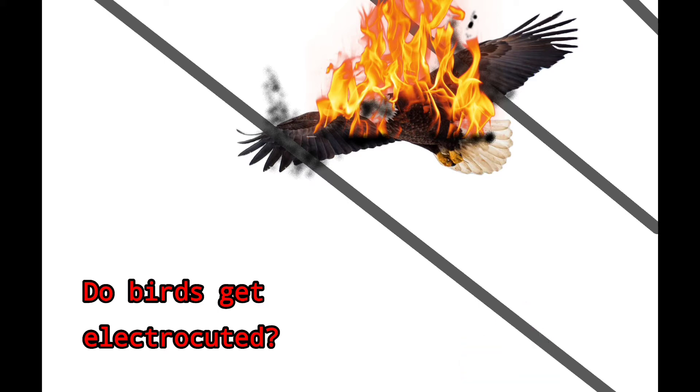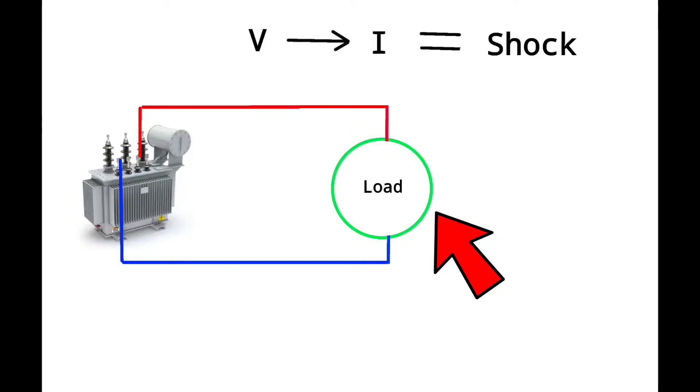Here a load is connected with a source. If we want a load to run and work properly, we have to provide sufficient voltage and current to flow. If voltage and current is present in any circuit connected with load, then it might be possible to run a load.